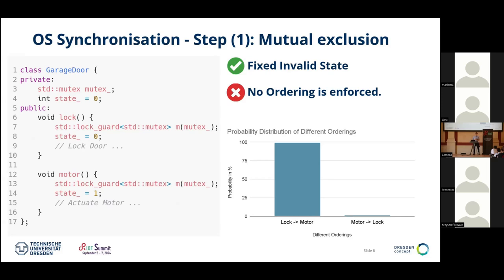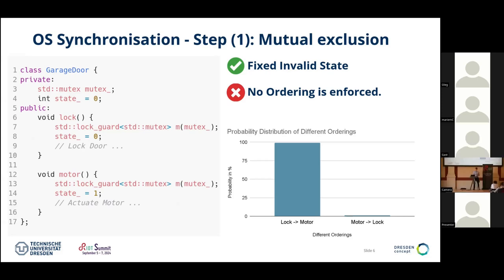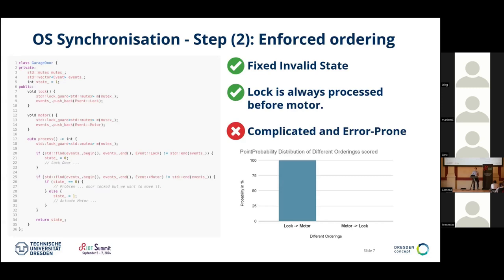We solved the first problem, but now there's the second problem: the ordering problem. 99% of the time it goes perfectly fine — we first unlock and then activate the motor. But in a very small percentage, it goes the other way and that breaks. This is non-deterministic behavior. It makes it incredibly hard to debug because, for example, you test this in your CI and it runs fine, but when you deploy it in the real world, it will suddenly, spontaneously break.